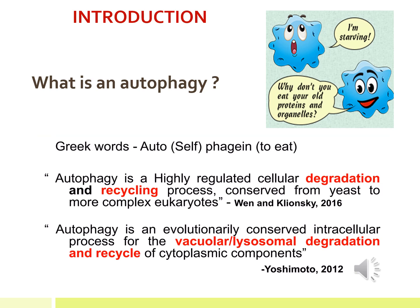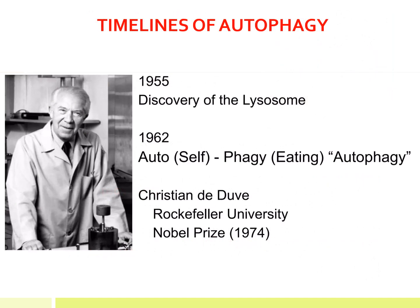Autophagy is a highly regulated cellular degradation and recycling process conserved from yeast to more complex eukaryotes. Different definitions of autophagy have been given by different researchers. The autophagy research was started in 1955 with the discovery of the lysosome. In 1962, scientist Christian de Duve from Rockefeller University coined the term autophagy and discovered the autophagy pathway in yeast. For his work, he was awarded the Nobel Prize in 1974.